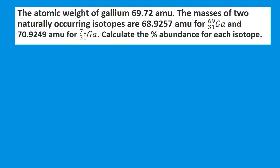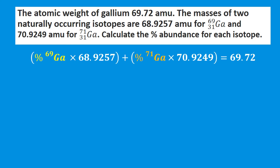Now let's look at an example where we are given the atomic weight of gallium and the masses of its two naturally occurring isotopes, and we need to find the percent abundance of each isotope. We know atomic mass equals mass times percent abundance for each isotope summed together. So we write: (percent of gallium-69 × its mass) + (percent of gallium-71 × its mass) = atomic weight of gallium.